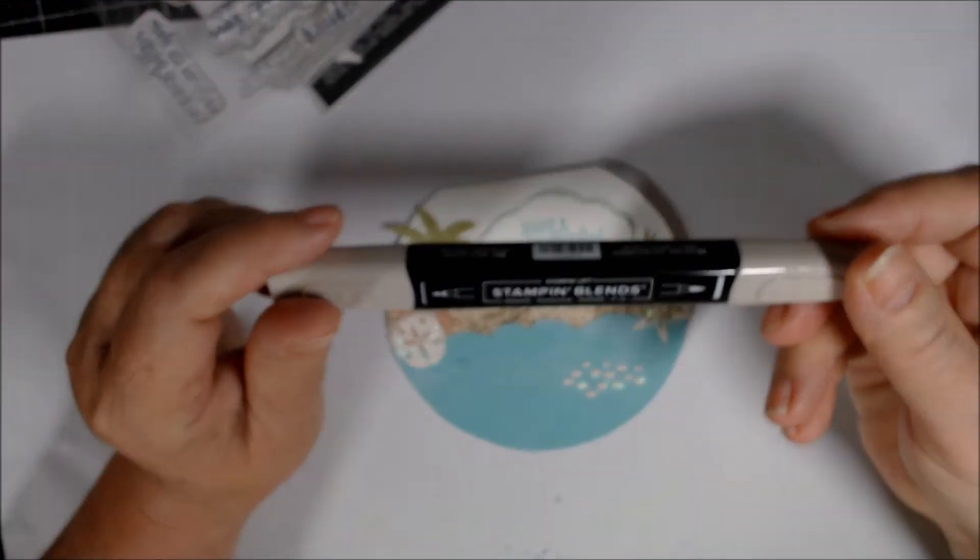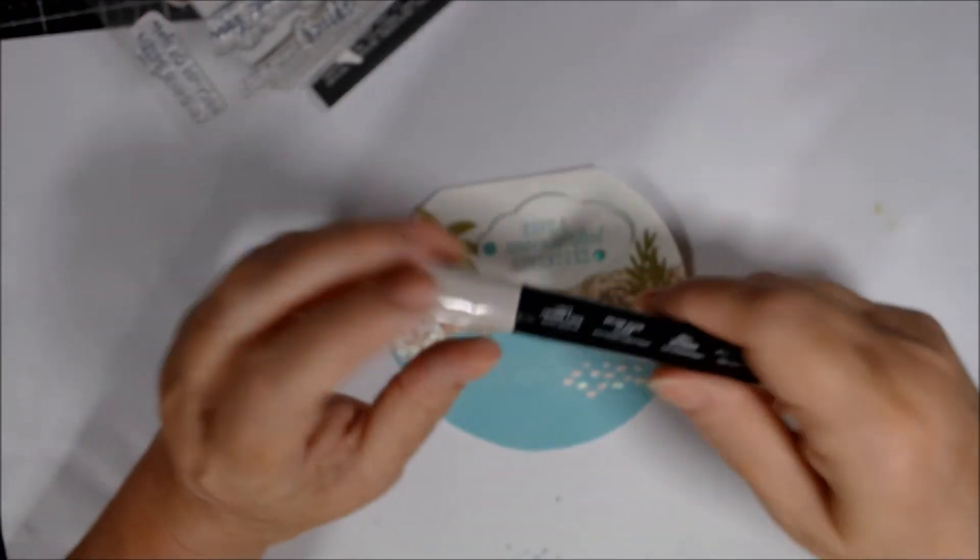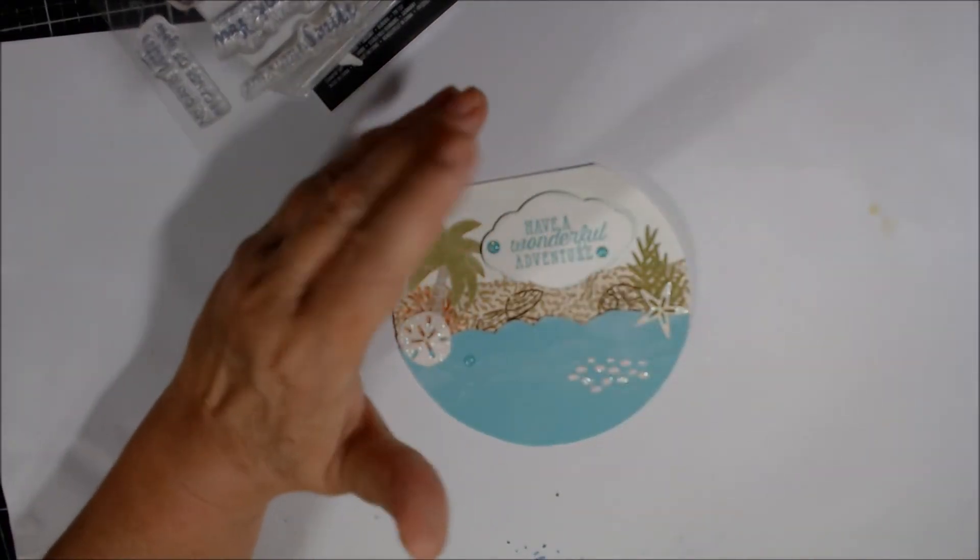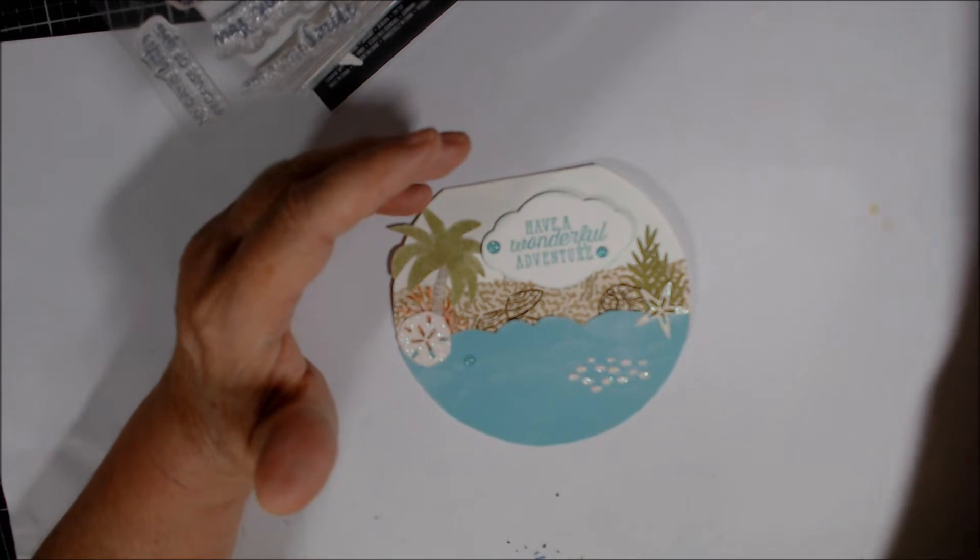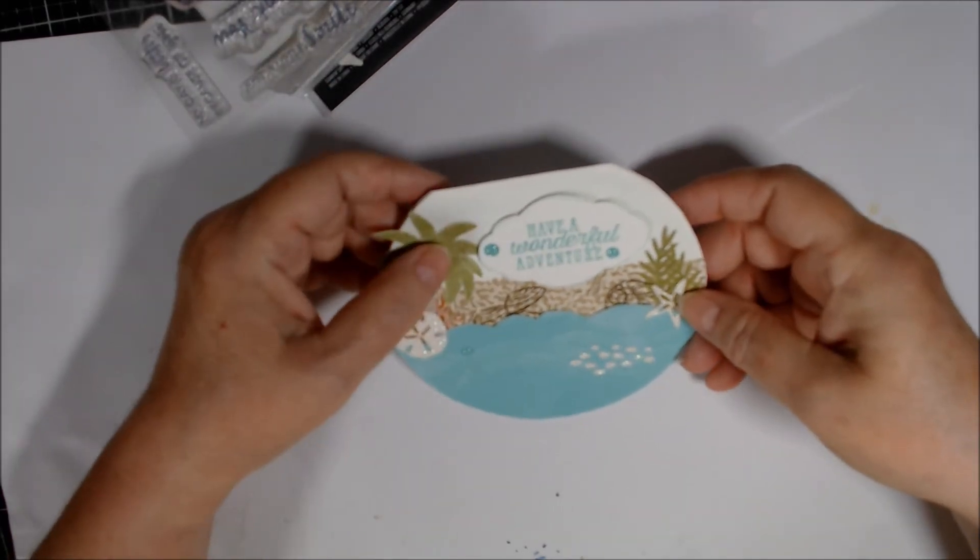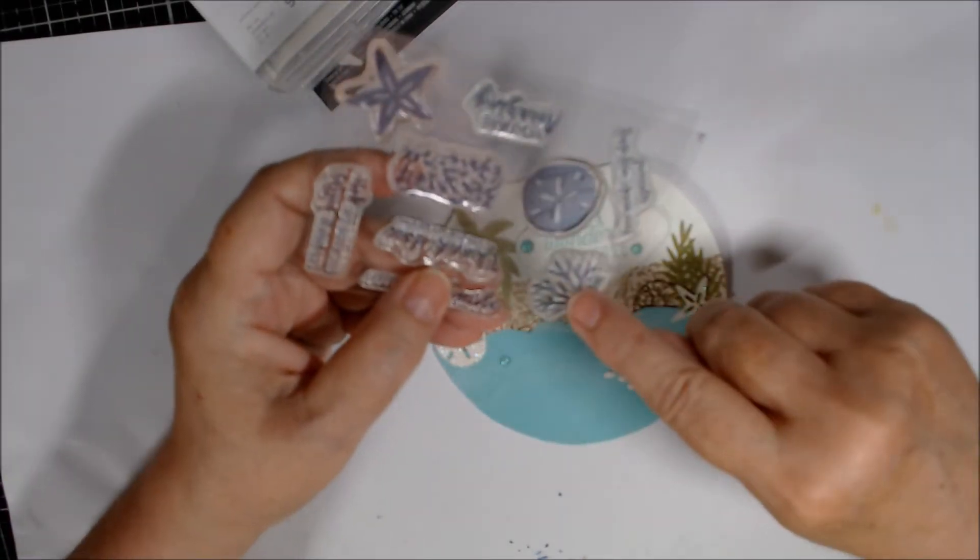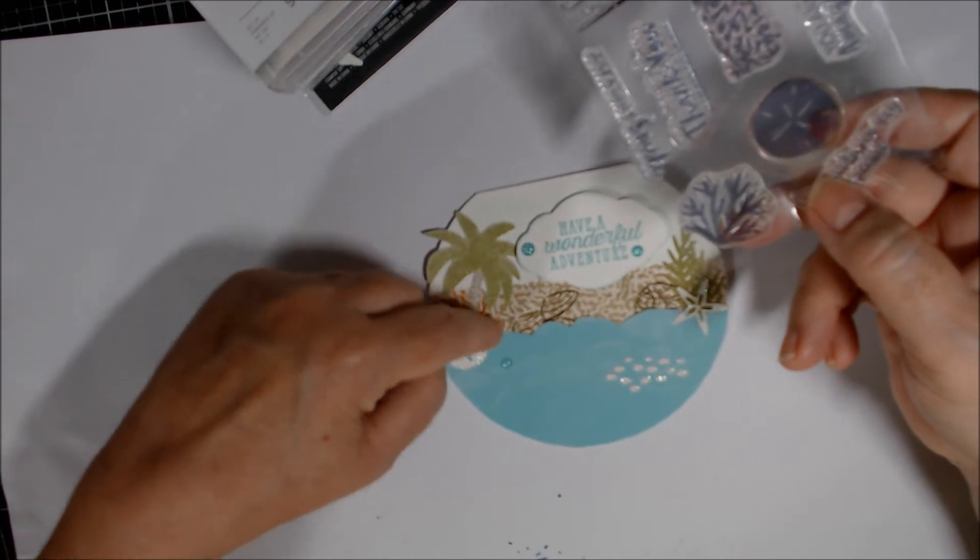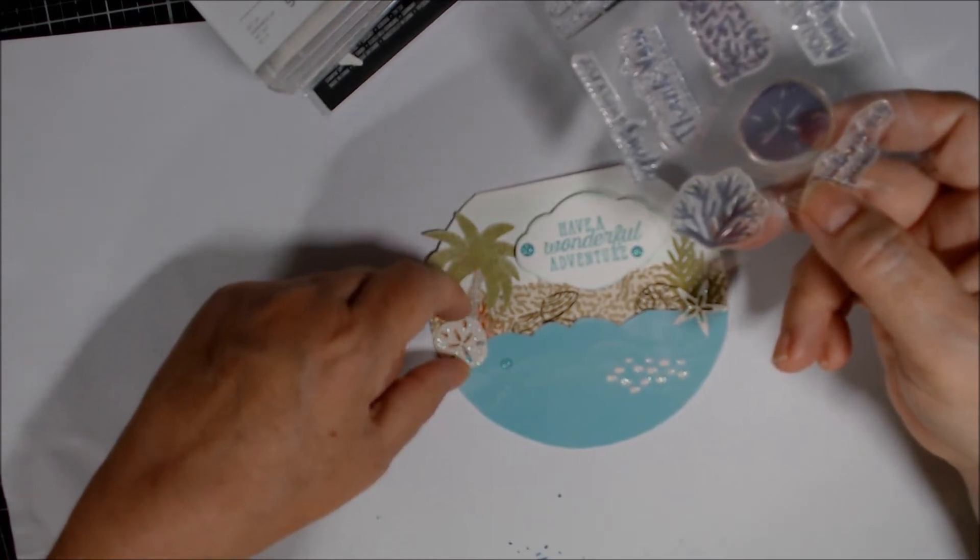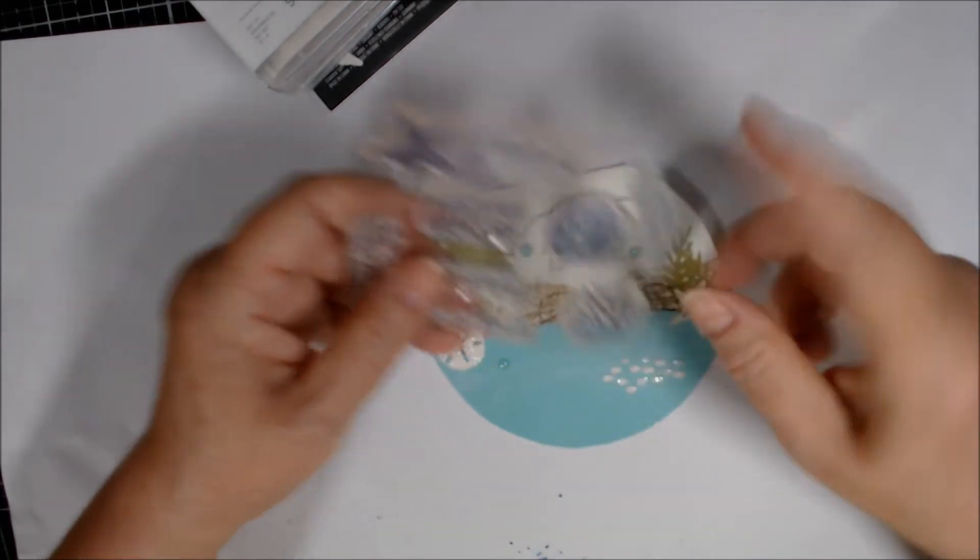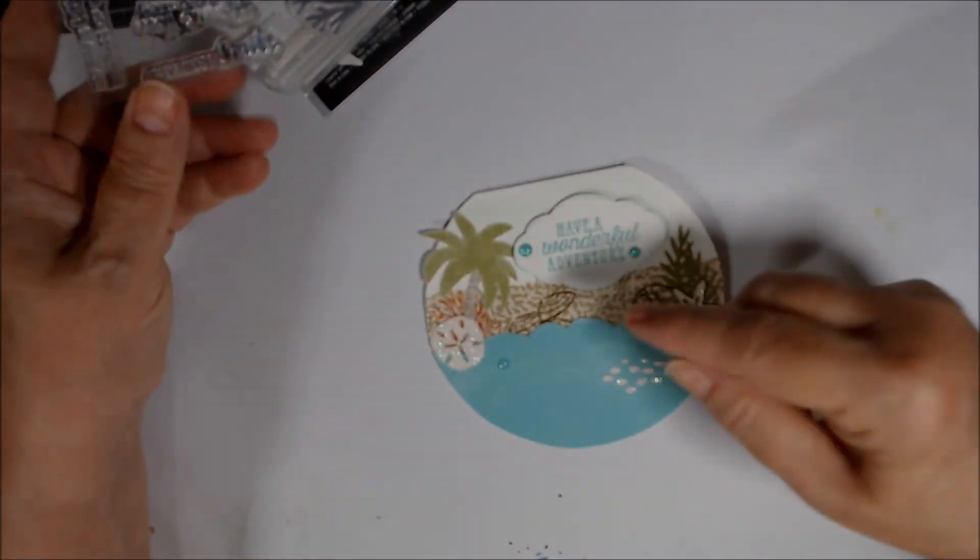But then I took my Crumb Cake Stampin' Blend, the light, and just went in. Because I didn't want the white showing through. I wanted it to be more like sand. The tree, the coral, I actually stamped in Calypso Coral twice back here. But then in front of it I do have a little piece of the coral from the kit that's the same shape. The vellum.